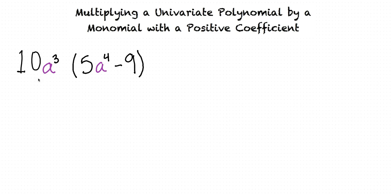So in this example, 10a cubed is right next to the parentheses with nothing in between, so we can assume that these two expressions are multiplied. The order of operations tells us that we should simplify the expression inside the parentheses before doing multiplication. But since we can't simplify the expression inside the parentheses,